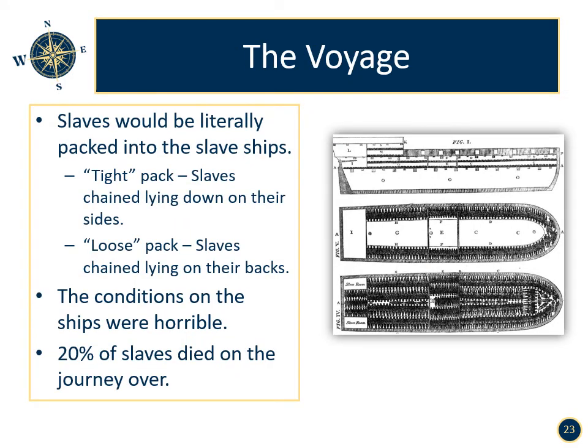The voyage. Slaves would be literally packed into slave ships. There were two packing methods: tight pack refers to slaves being chained while lying on their sides, and loose pack refers to slaves being chained while lying on their backs. The conditions on the ships were horrible. Twenty percent of slaves died on the journey over, and those who survived would never experience freedom again.